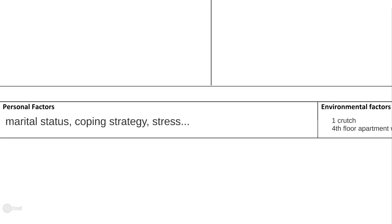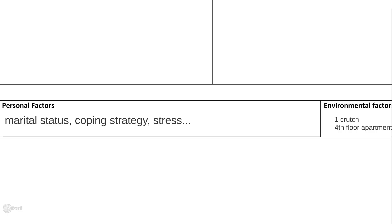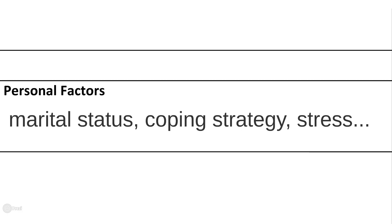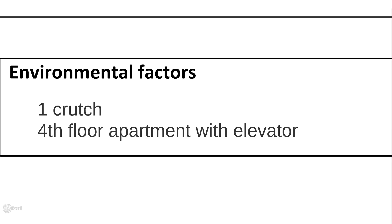Personal and environmental factors also have an impact on your treatment process. Personal factors are inside of a person and cannot be taken away from the patient physically — like their marital status, coping strategy, or any psychological issues. Environmental factors, on the other hand, are outside of a person and may have a good or bad influence on rehabilitation, like their use of crutches or their living situation.